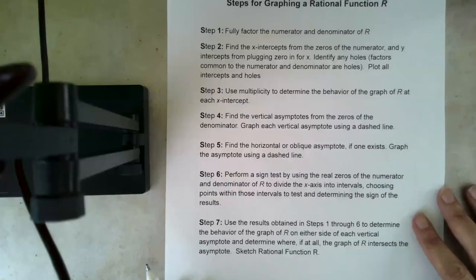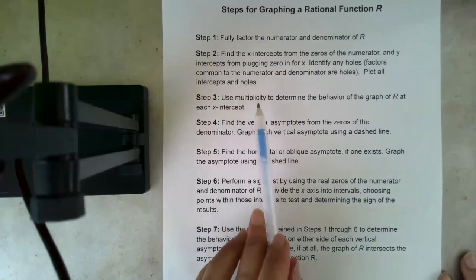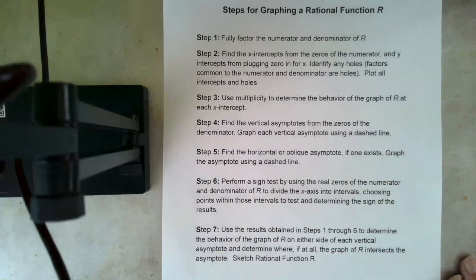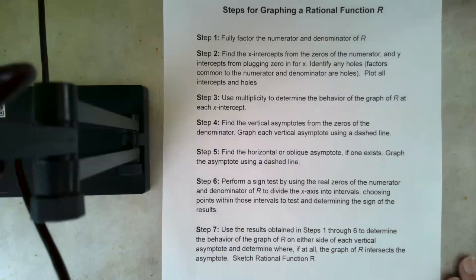And that is a summary of using multiplicity to determine the behavior of the graph at each intercept. So we will take a look at that some more as we continue to graph rational equations, rational functions, but there's your first taste of what multiplicity means and how we use it to predict behavior on either side of an x-intercept.